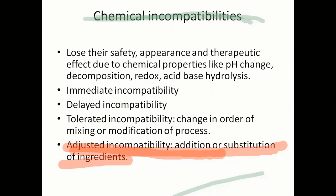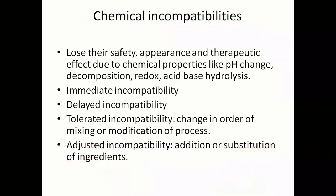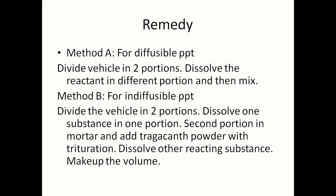In adjusted incompatibility, you cannot change the order of mixing — or even if you change the order of mixing, the incompatibility cannot be overcome. The solution is to either add or substitute an ingredient. If substance A is causing the incompatibility, you either substitute A or add a third substance to overcome it. In short, adjusted incompatibility cannot be overcome just by changing the order of mixing; you have to change the substance causing the incompatibility.